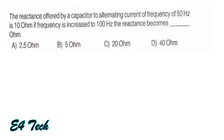The reactance offered by a capacitor to AC at 50 Hz is 10 Ohm. Capacitive reactance XC = 1/(2πFC), so XC is inversely proportional to frequency. If frequency is increased to 100 Hz (doubled), XC becomes half, i.e., 5 Ohm.